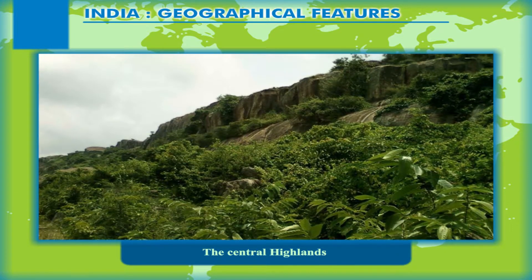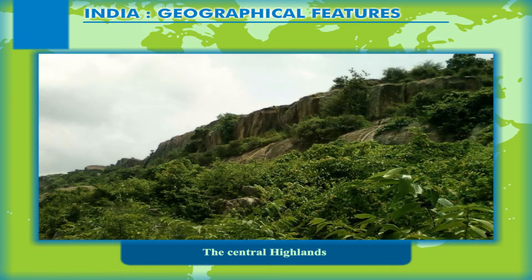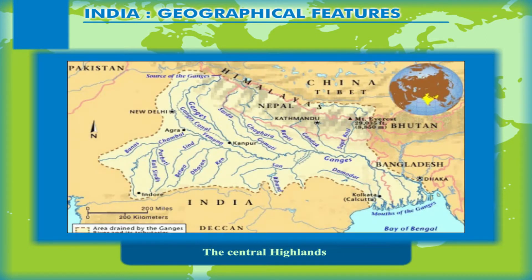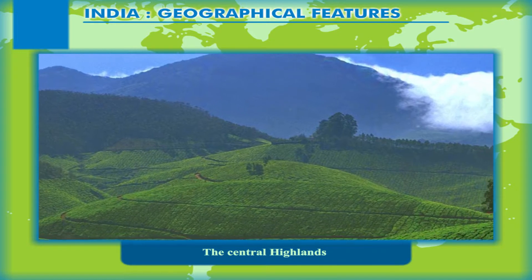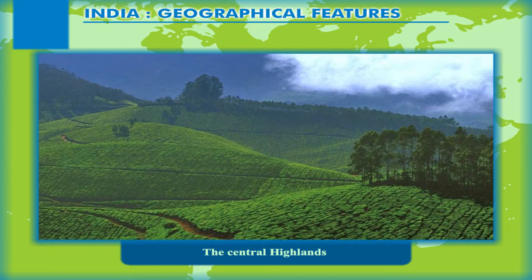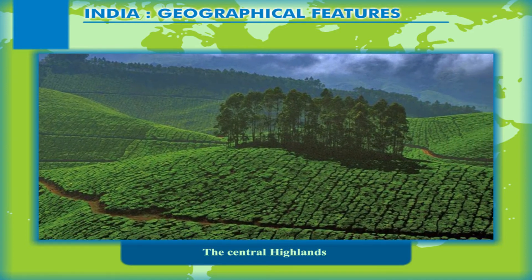The Central Highlands form the comparatively smaller northern portion of the peninsular plateau, sloping towards the north. The rivers that flow northwards and join the Ganga as its tributaries include Chambal, Son, Kali Sindh, Parvati, Damodar, Kain, and Betwa. This elevated region of central India is divided into smaller plateaus.